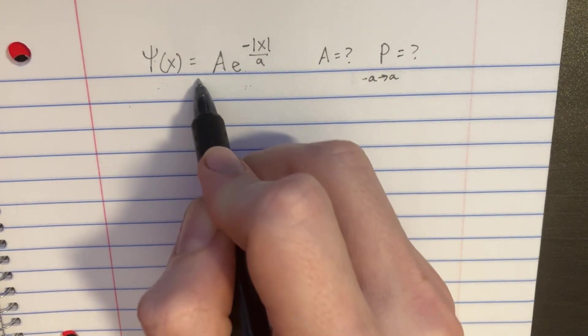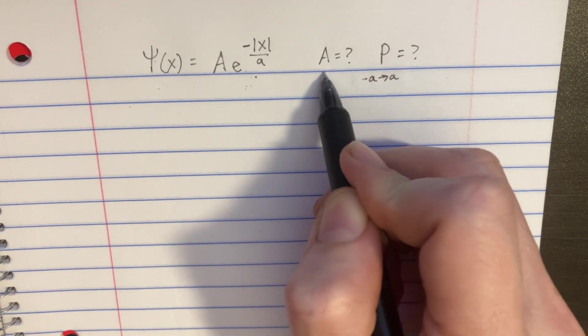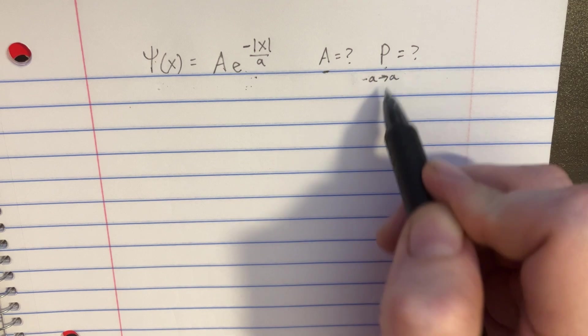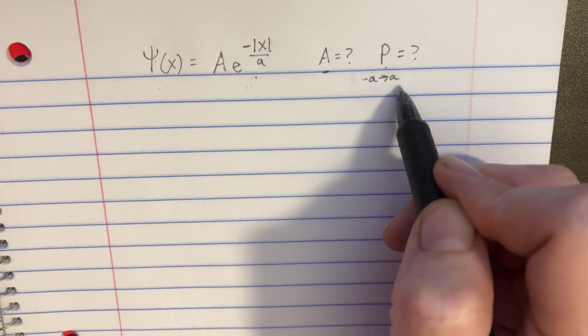We're given this wave function right here, and we're asked to figure out what the amplitude is and then the probability of finding it between this point negative a to a.